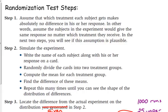Step one says assume that which treatment each subject gets makes absolutely no difference in his or her response. So we are assuming that the experiment or the treatment doesn't matter. We are assuming that the treatment does not matter.